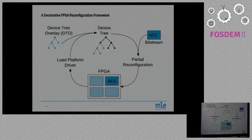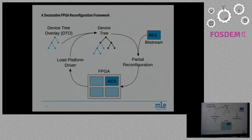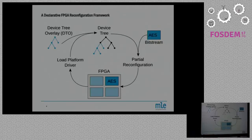How do we actually trigger a reconfiguration, and how do we specify what goes in — parameters, platform drivers, or the bitstream itself? That's done via the device tree overlay. Every region within the FPGA has a representation in the overall system device tree. By loading this overlay onto that address, the reconfiguration process is triggered. We put the device tree overlay into the currently present device tree, which triggers reconfiguration, configures the AES bitstream into the FPGA, and afterwards the driver is loaded and the system is fully operational.